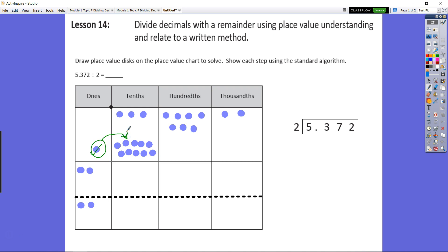One whole can be regrouped as ten tenths. If we're talking about money, one dollar equals ten dimes. Now we have ten tenths that we regrouped plus our three tenths to give us thirteen tenths. Let's divide those thirteen tenths evenly by two. We get six in each group with one tenth remaining.